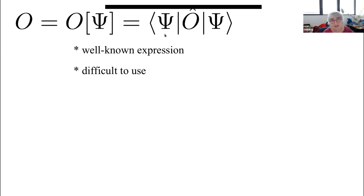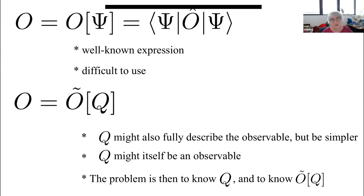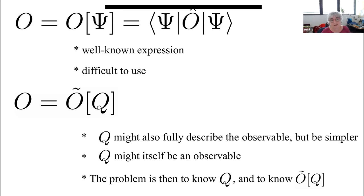The many-body wave function is a huge object and it's almost impossible to calculate in many cases, and certainly impossible to store. You have different ways to go — for example at CASUS you might do quantum Monte Carlo or other approaches where you try to approximate the wave function. Another route is to say: this is an integral, so I essentially integrate out a lot of things. Do I really need the full wave function with all its details to get an observable? Couldn't this observable depend on a much more compact quantity Q — some other quantity which is not the many-body wave function but which could fully describe our observable while being much simpler?